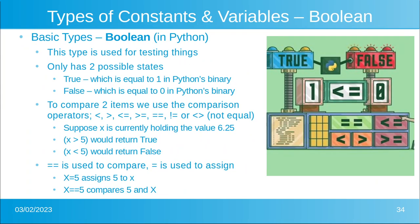The next type is Boolean. Boolean is a basic type used in every programming language. In Python in particular, this type only has two possible states: True or False. It turns out that internally, True is equal to one and False is equal to zero in Python. So you can actually compare it to one and zero, but typically you don't do that. We use comparison operators.